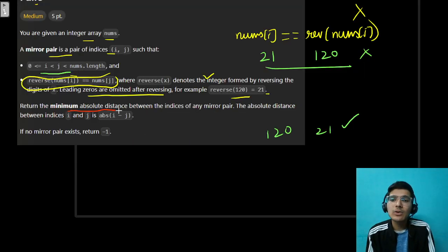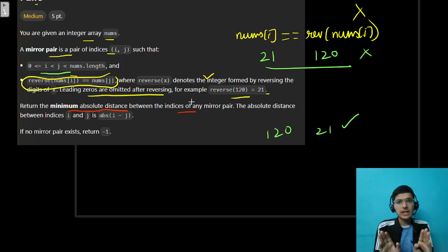That you need to take care of these things because strictly they mentioned i,j. There is an order. You have to read this problem. Many of you might get wrong here as well. You might be confused. And then what we have to do? Return the minimum absolute distance between the indices of any mirror pair.